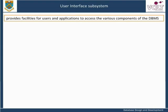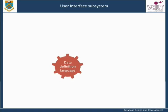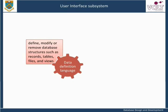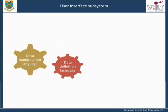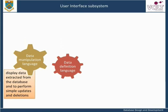The interface subsystem provides facilities for users and applications to access the various components of the DBMS. Most DBMS products provide a range of languages and other interfaces, since the system will be used both by programmers or other technical persons, and by users with little or no programming experience. Some of the typical interfaces to a DBMS include: a data definition language, or data sub-language, which is used to define, modify, or remove database structures such as records, tables, files, and views.